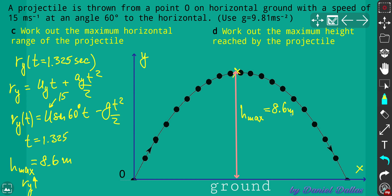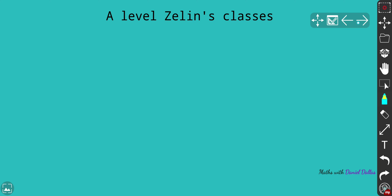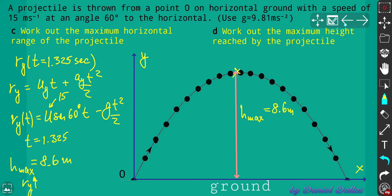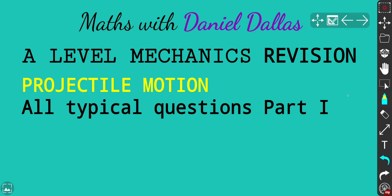So we've completed all four typical basic projectile motion questions. I used component form — x and y axes — rather than i and j unit vectors, but either approach works. Don't forget to visit A-level Zin's class for maths, which covers foundation A-level maths and explains how the formulas work. Please subscribe and share your comments on what you'd like to see next. That was part one for projectile motion — all typical questions. Thank you and see you later!